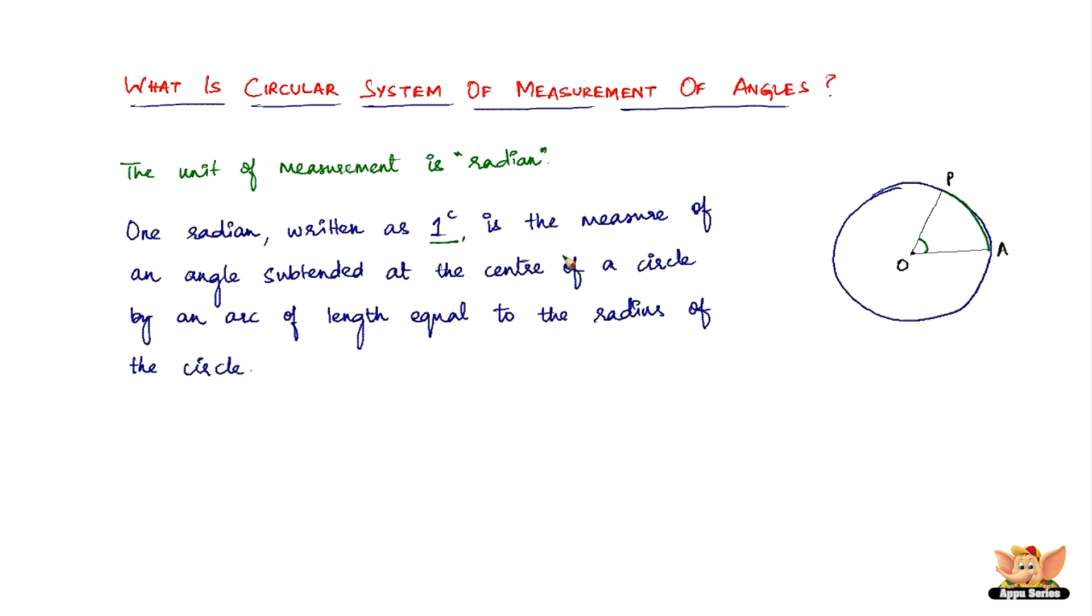This concludes, this is quite a simple concept not a very complicated one. This is the third and the final system of measurement of angles, called the circular system of measurement of angles. I'll see you in the next videos with more concepts based on measurement of angles.